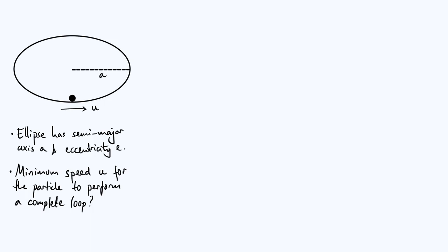So if E is 0 then you have a circle, and as E gets closer and closer to 1 you can imagine squashing your circle up more and more, making it more non-circular. Towards the end of the video we will briefly consider what happens if your ellipse's major axis is vertical instead of horizontal, but let's focus on the horizontal case first.